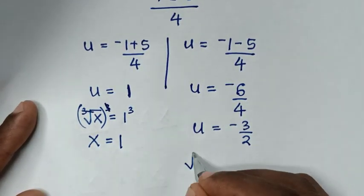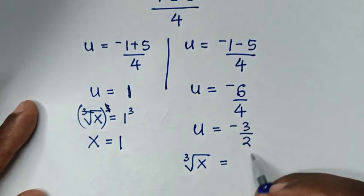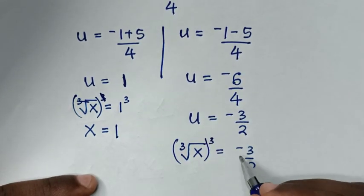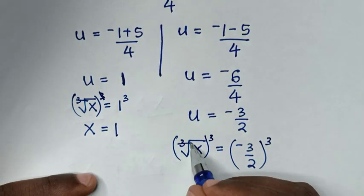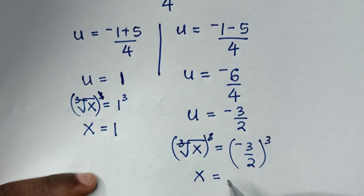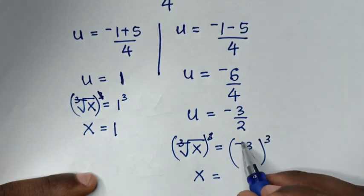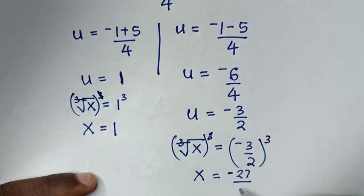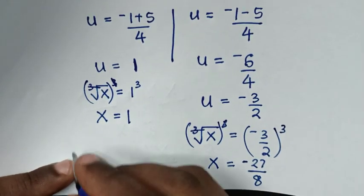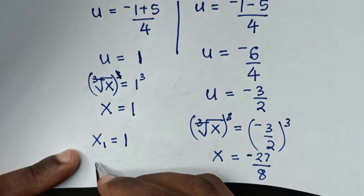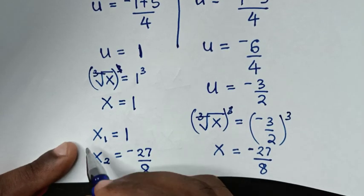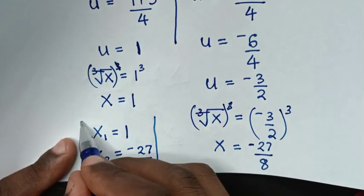For the second solution, cube root of x equals negative 3 over 2. We cube both sides, the cube root cancels the power of 3, giving x equals negative 3 over 2, all cubed. Negative 1 cubed is negative, 3 cubed is 27, and 2 cubed is 8, so x equals negative 27 over 8. Therefore our two values of x are 1 and negative 27 over 8.